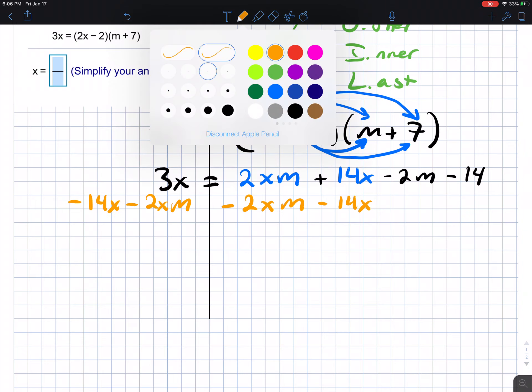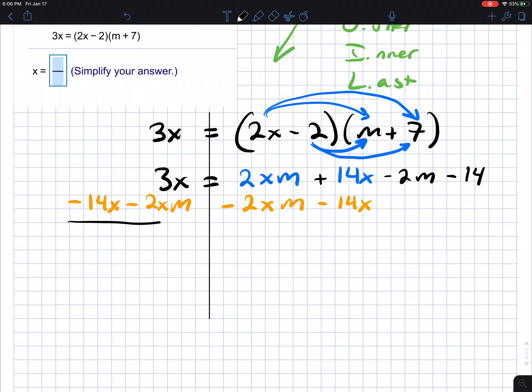So again, the very first couple of topics that we talked about that first day of class was the additive and multiplicative properties of equality, which says that we can add the same real number to either sides of the equation to preserve equality. So we added negatives here.